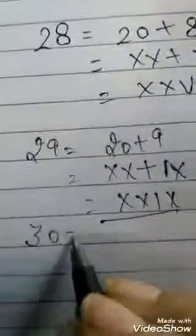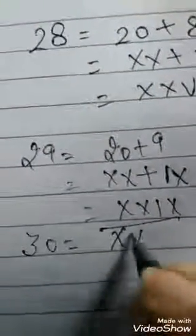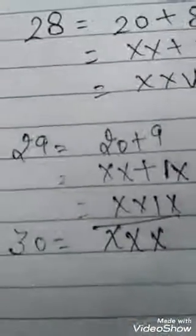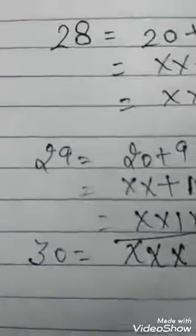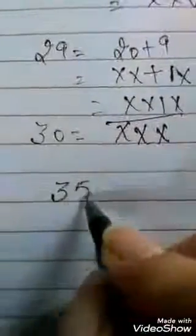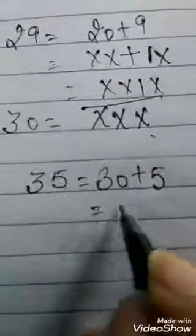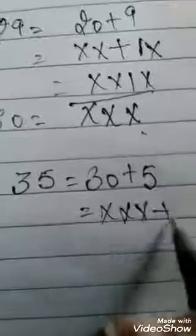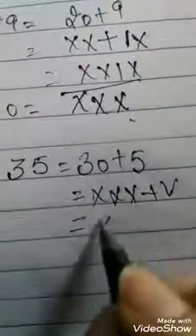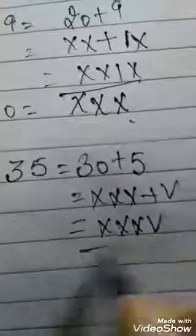And 30 is triple X. Yes, this is very simple. You make 31, 32, 33, 35 like 35. 30 plus 5. Now 30 ka symbol hai triple X plus 5. So this is made 35.